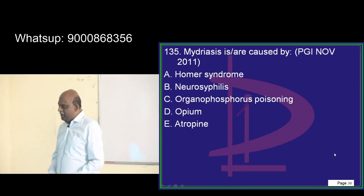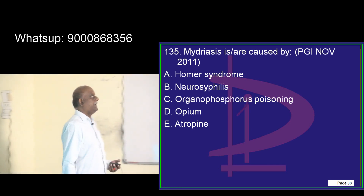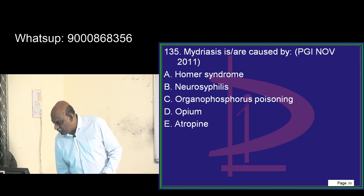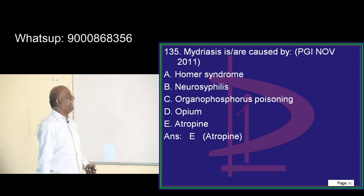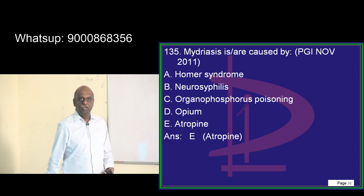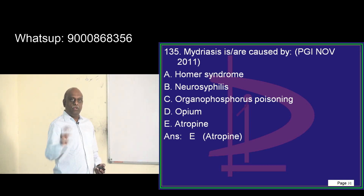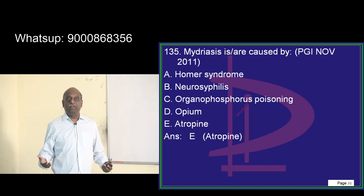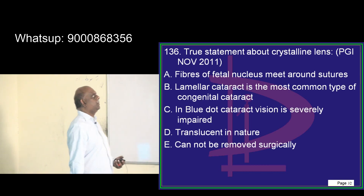What leads to mydriasis is a very important question. Mydriasis is caused by atropine. In Horner's you have miosis. In neurosyphilis, there is an Argyll Robertson pupil — there also there is failure to dilate. In opium poisoning, you have excessive acetylcholine activity that leads to miosis.